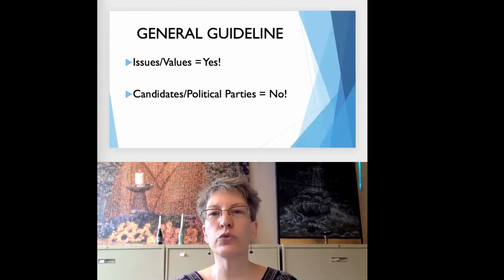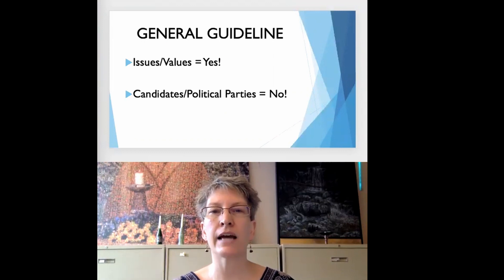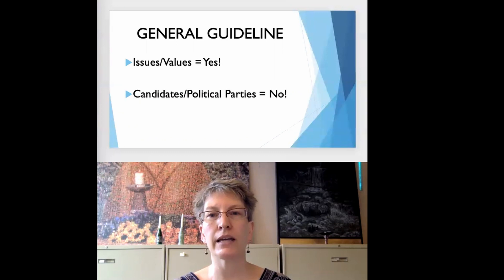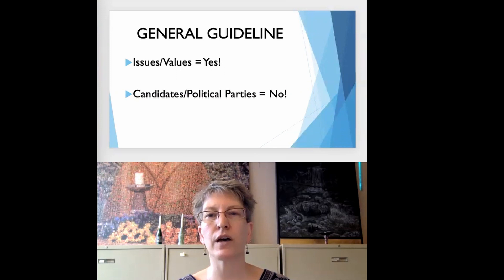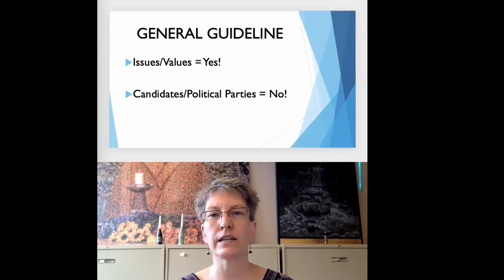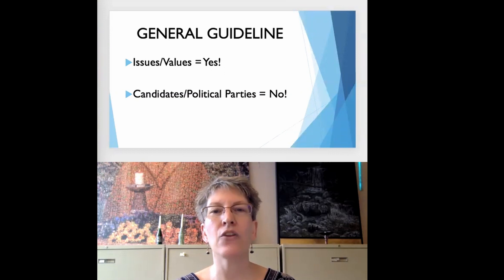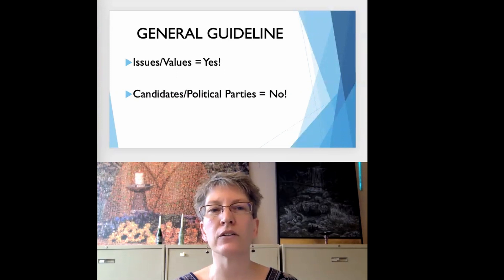However, UU congregations do not have 501c3 status simply by being associated with the UUA. While congregations do not have to go through the same application process with the IRS as educational, scientific, and other organizations, congregations do need to file with the IRS to have 501c3 status assigned, and they're then required to abide by the 501c3 regulations.